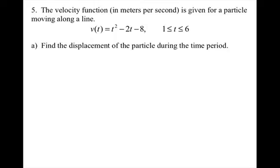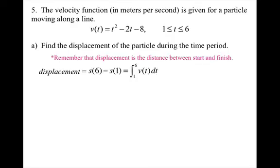Now let's try this one. The velocity function in meters per second is given for a particle moving along a line. V of t is equal to t squared minus 2t minus 8, where t is between 1 and 6. For part A, I want you to find the displacement of the particle during the time period. Remember that the displacement is the distance traveled between the start and the finish. So that means our displacement is our net change.